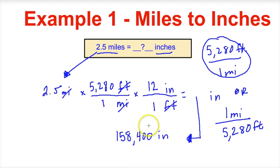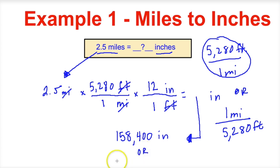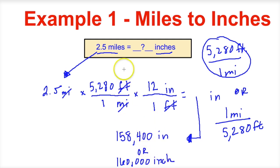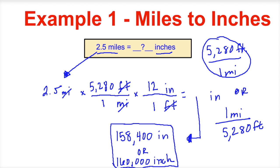This is not the correct number of significant figures. If you wanted to put this in the correct number of sig figs, your answer must contain 2 sig figs, and we end up with 160,000. So 2.5 miles is the same thing as 160,000 inches using dimensional analysis.